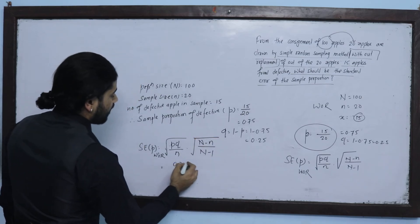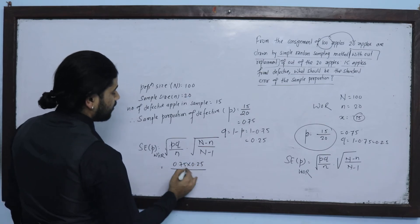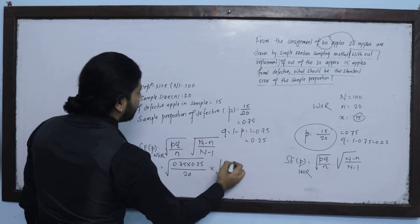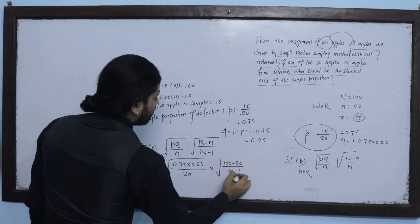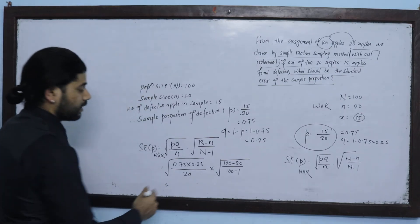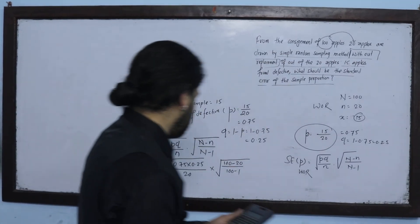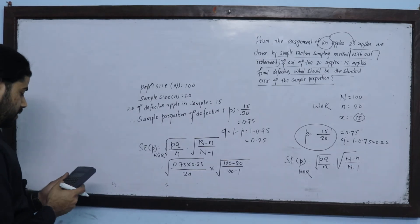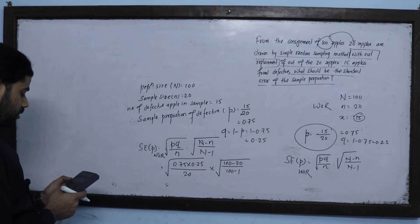So we compute 0.75 into 0.25 upon sample size 20, into 100 minus 20 upon 100 minus 1. We will solve the answer: 80 divided by 99, root under.